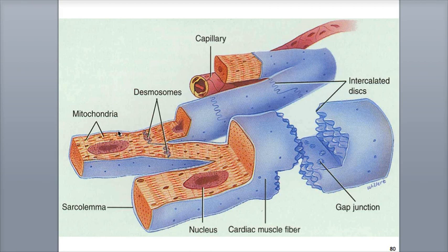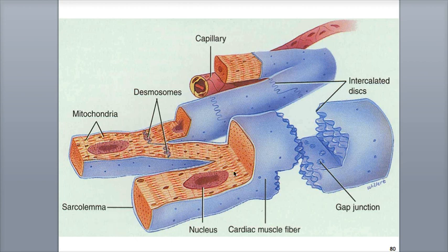Cardiac muscle fibers contain more mitochondria than skeletal muscle tissue, indicating a strong need for aerobic cellular respiration in order to produce enough ATP to power their contraction. The fibers are also branched, and have a single large nucleus within each fiber.